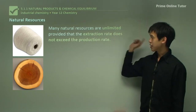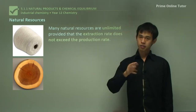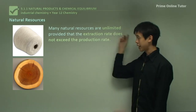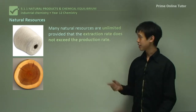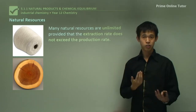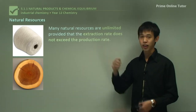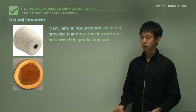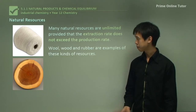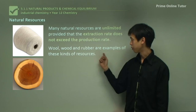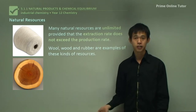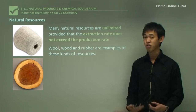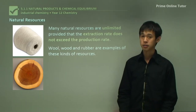Most of these natural resources, barring precious metals, are generally unlimited in the sense that as long as our extraction rate doesn't exceed the rate at which they can be produced, we can call them unlimited. Wool, wood, and rubber are all examples of these kinds of resources - unlimited, but under the provision that we don't use them faster than they can be reproduced.